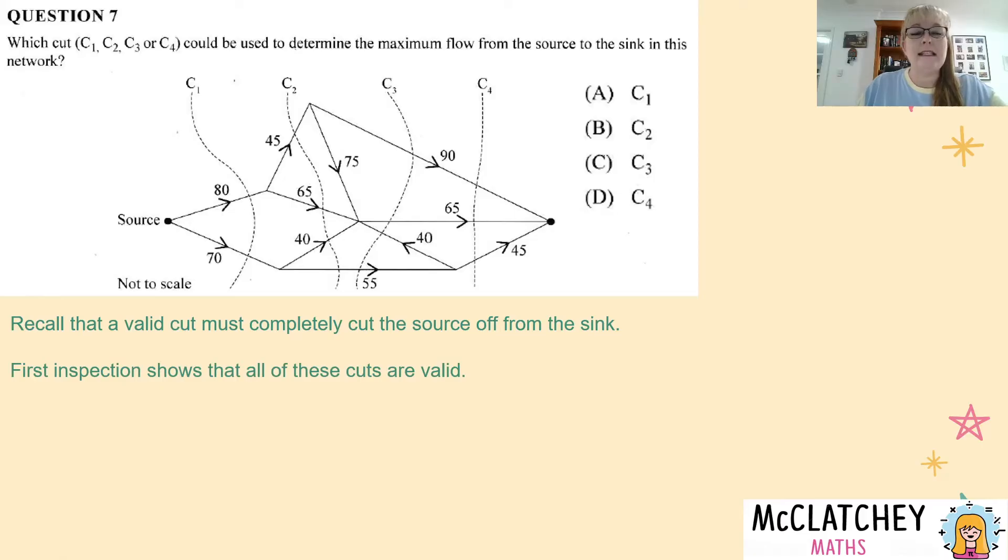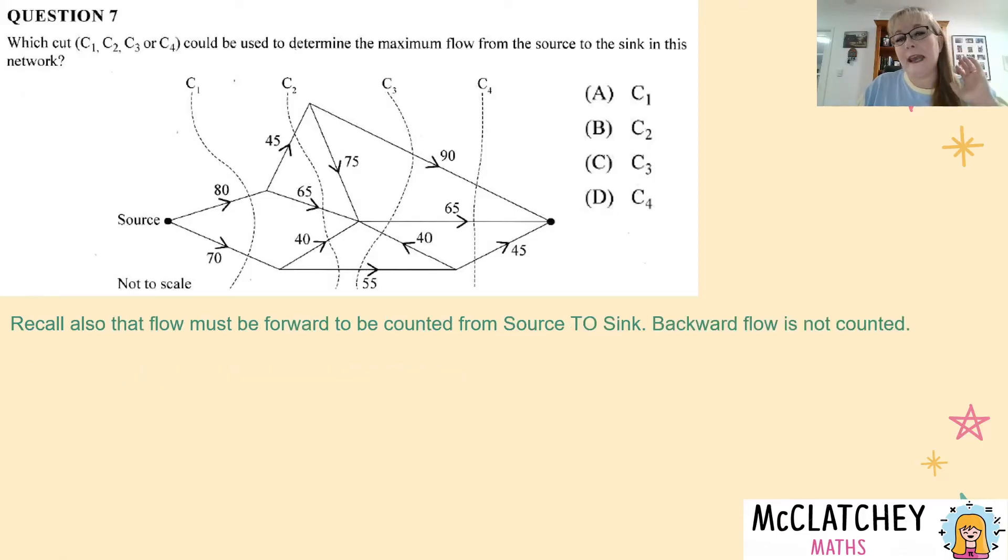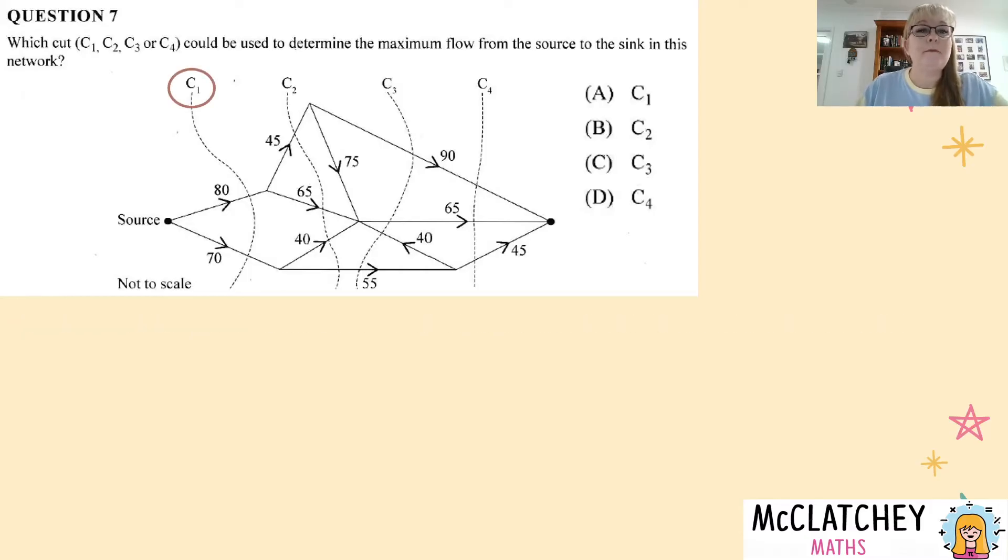Okay so the next thing we need to remember is that flow is only counted if it goes forward through the network from the source to the sink. Any backward flow, so arrows going back across the cut from the sink to the source, will not be counted. So let's start with cut one and that's shown here with the circle. Cut one passes through two different parts of the network, 80 plus 70, so that gives us a flow of 150.